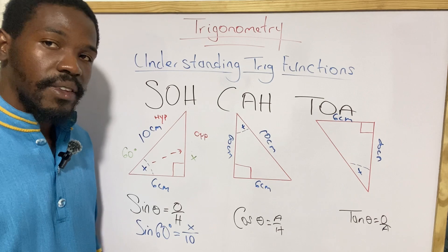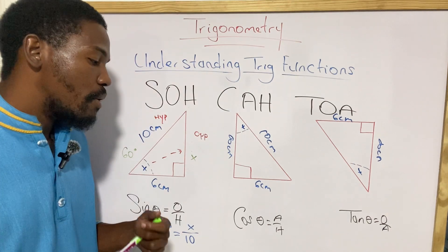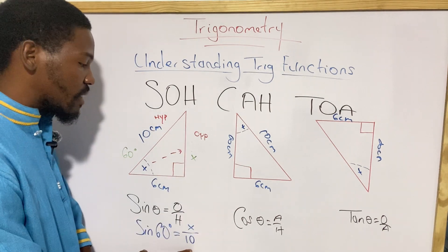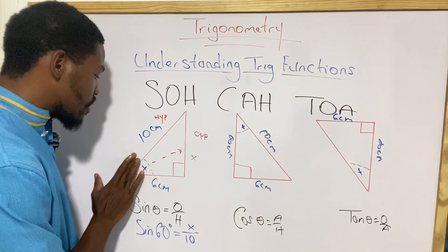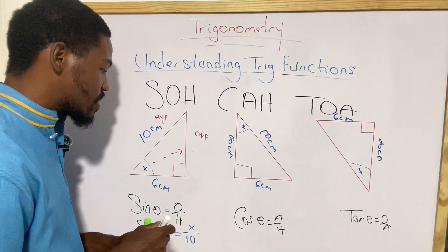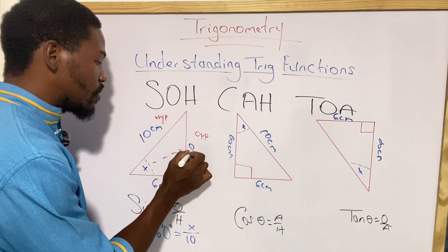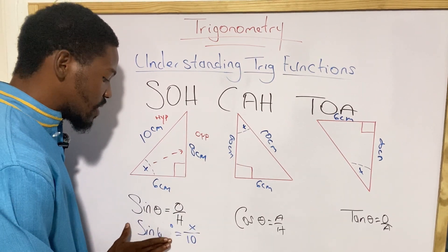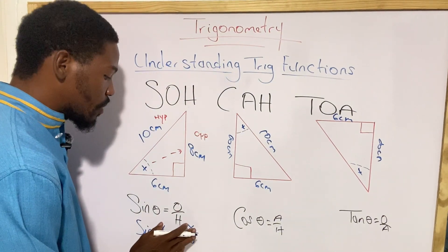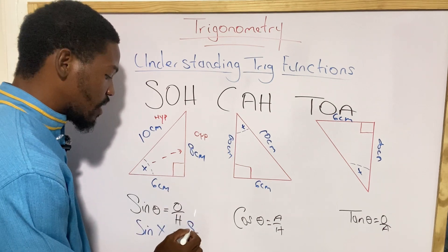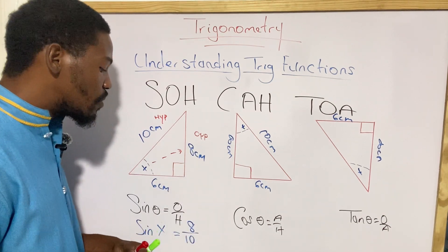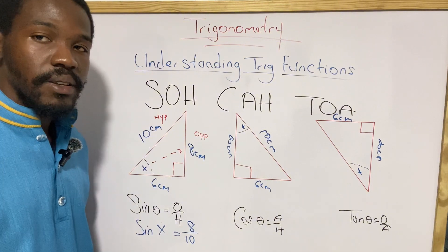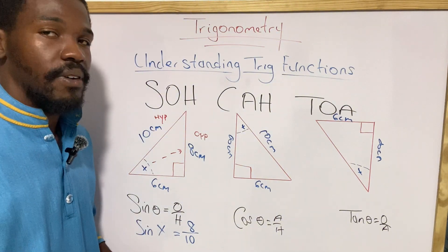That's how we lay out the formula. Now if the angle itself is the unknown x, and we know the opposite side is 8 centimeters and the hypotenuse is 10, we would write: sine x = 8/10. We know to use sine because the opposite and hypotenuse are both involved.